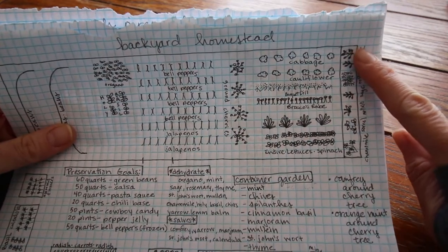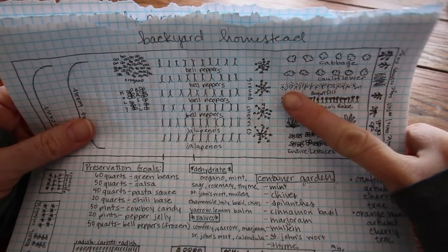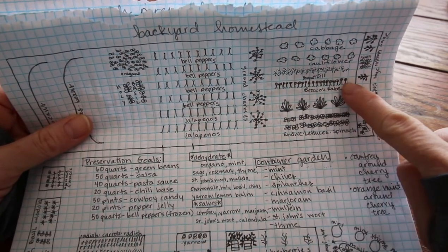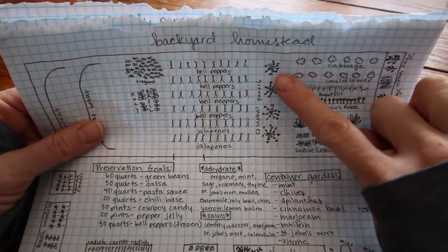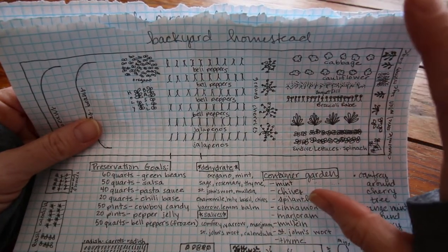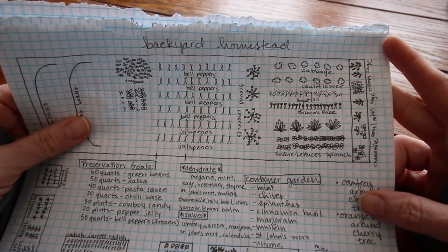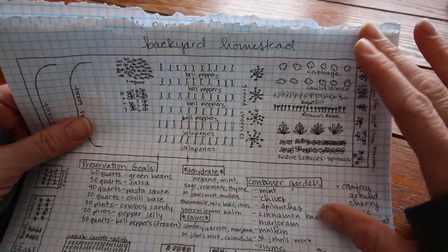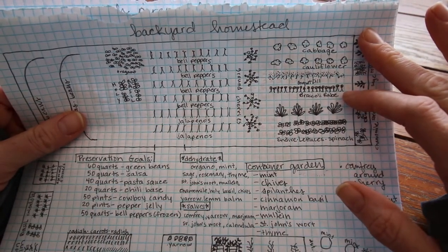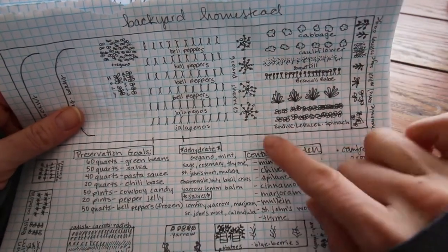I am determined this year to get decent cabbage and cauliflower and this is going to be dill right here and I've got broccoli rabe here. I'm gonna get some row covers for this stuff because of cabbage loopers. I really don't want them to get decimated so we're gonna prevent that problem before it starts.